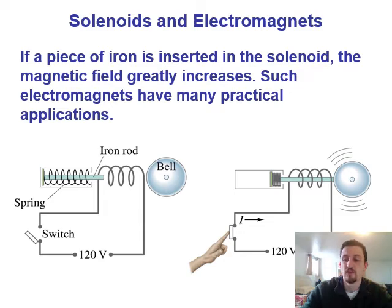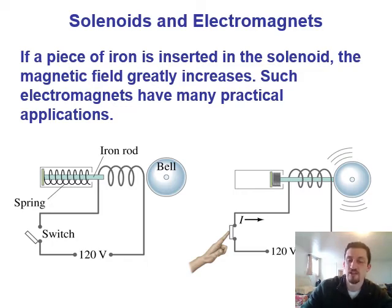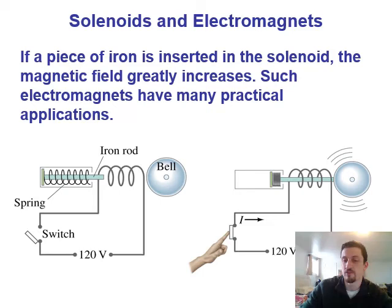You may have heard of an electromagnet — basically you take a piece of iron or something very magnetic and insert it inside a solenoid, which greatly increases the strength of the magnetic field. Electromagnets have a lot of practical applications. Looking at this example on the slide: the switch is open, so there's no current and no magnetic field. But once you close the switch, you have current flowing, creating the electromagnet, and it rings the bell. So hitting the switch turns it on and rings the bell.